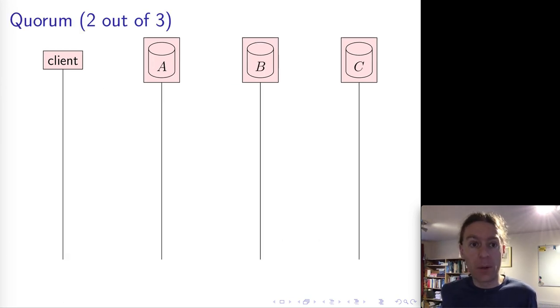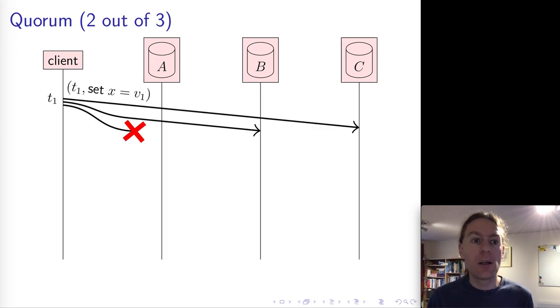So we can solve this problem using something called a quorum. And what we do here is here I've got an example quorum of two out of three. And so when we want to make a write, the client sends its request to all three replicas. We're going to assume here there are three replicas. And for some reason, the request reaches two out of three of these replicas. So the request reaches B and C, but not A.